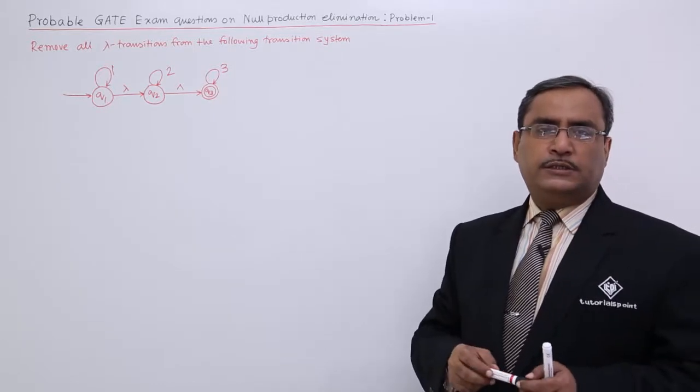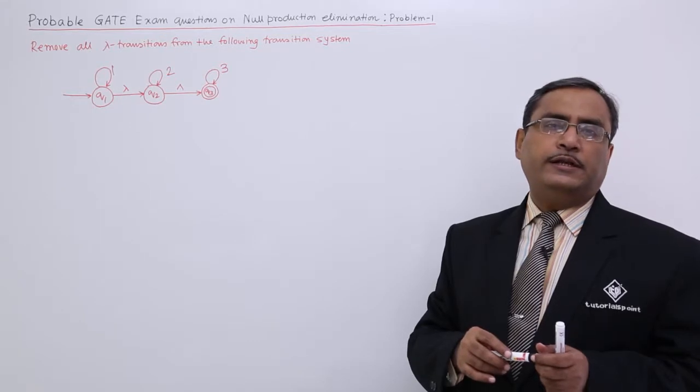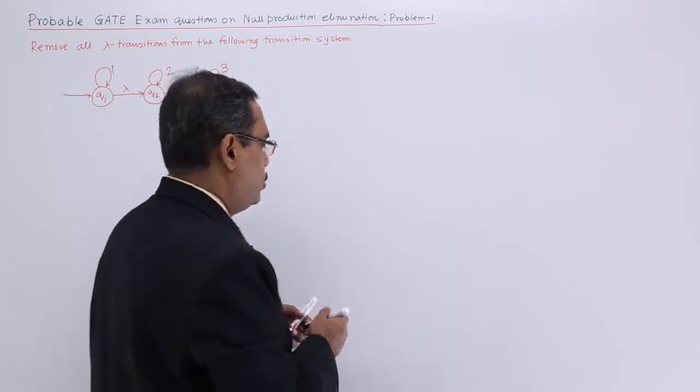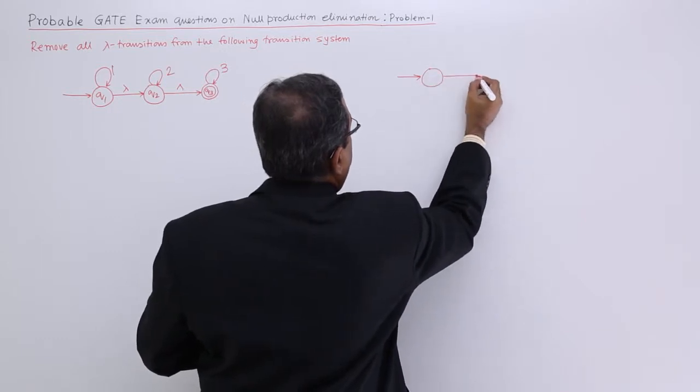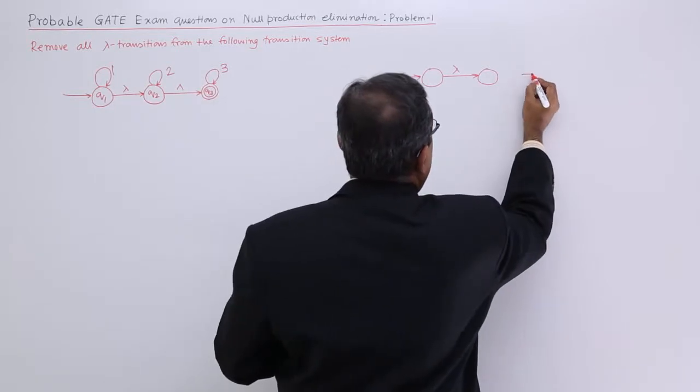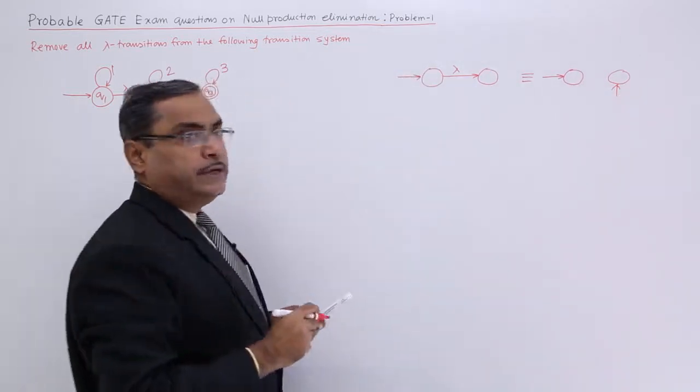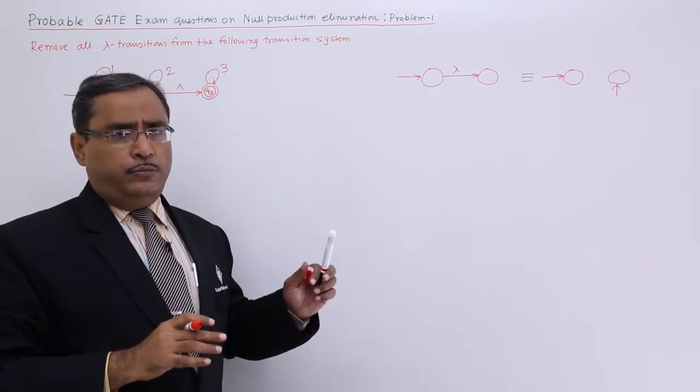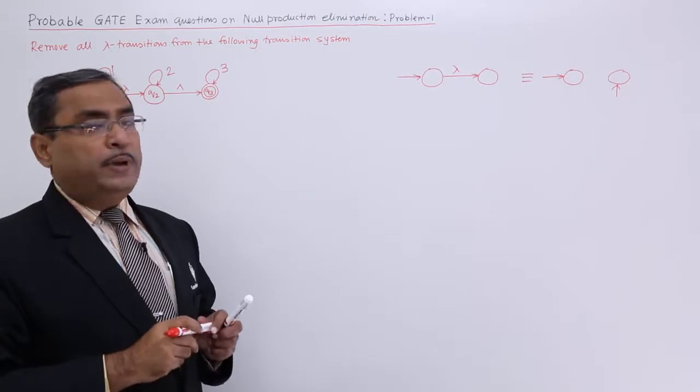In our earlier video, we have discussed the rules for eliminating lambda transitions from a transition system. If you can summarize, we are having mainly three rules. Rule number one is that, if we are having this initial state, this is my lambda transition and that is another state. After eliminating lambda transition, we shall go for this initial state to remain as initial state and this state will be made as the initial state. That is our rule number one. This need not to be applied in a certain order.